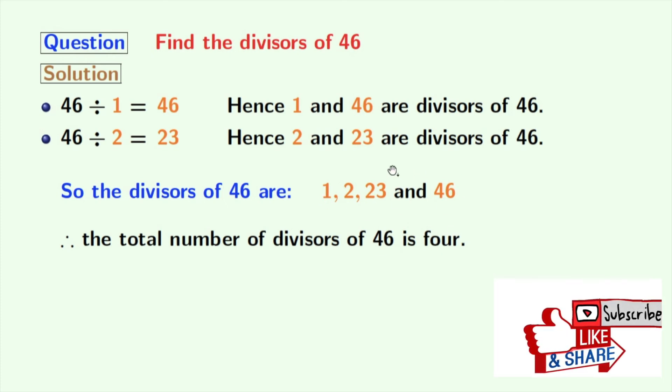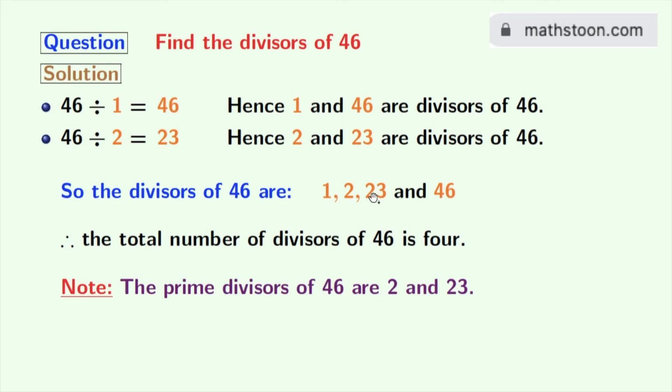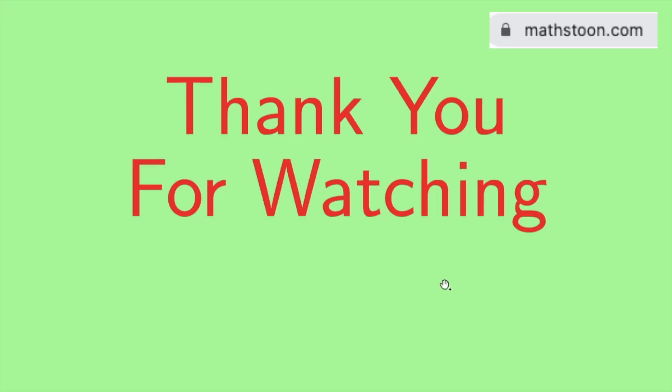Now, among these divisors, 2 and 23 are prime numbers because these 2 numbers do not have any divisor other than 1 and the number itself. So, the prime divisors of 46 are 2 and 23. Thank you for watching.